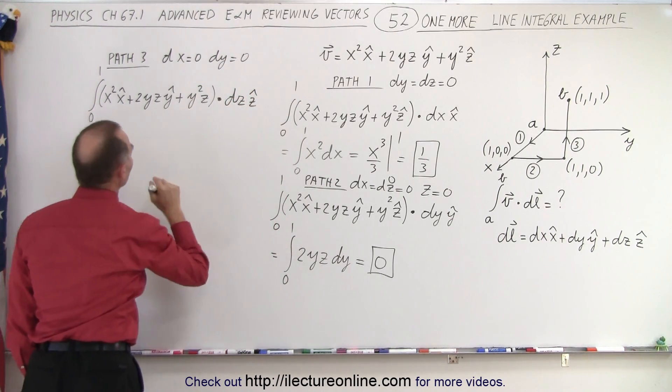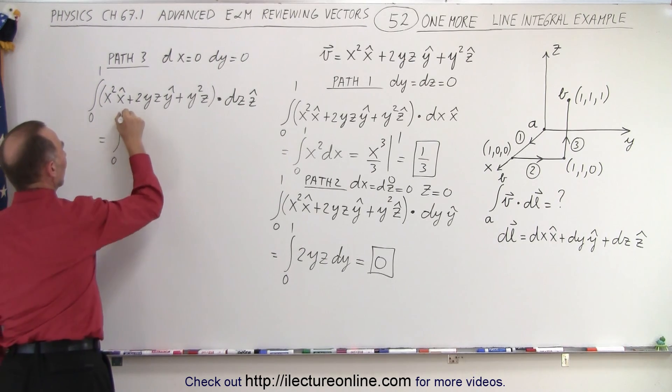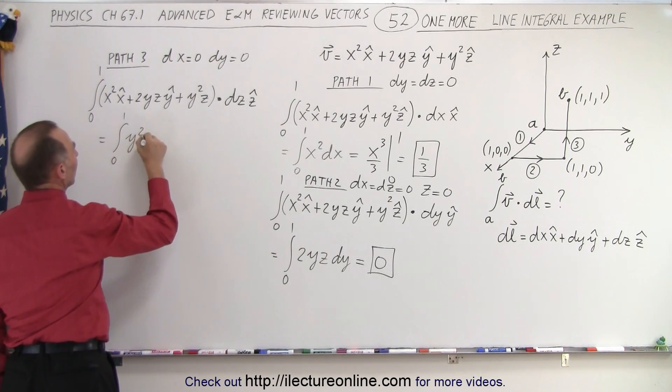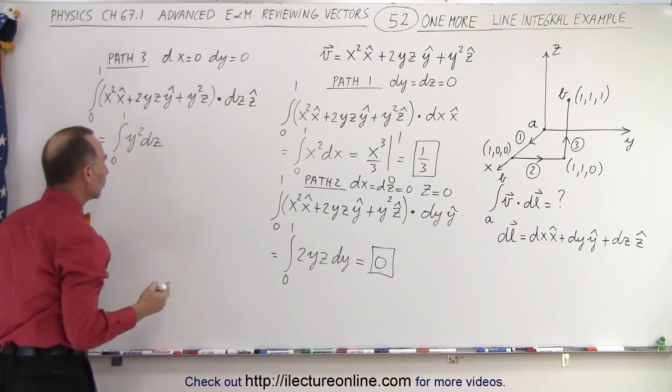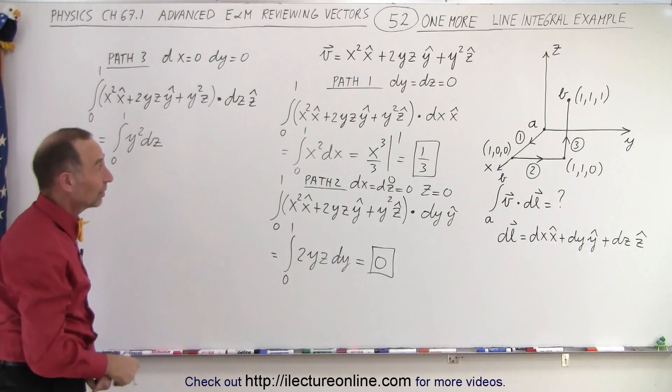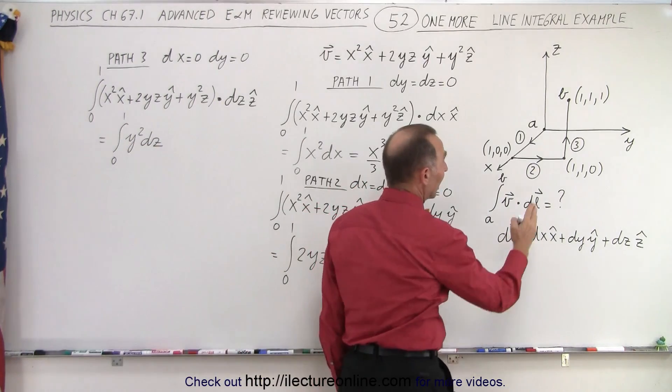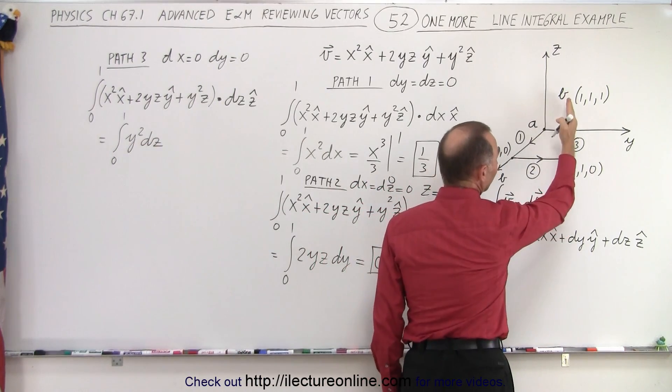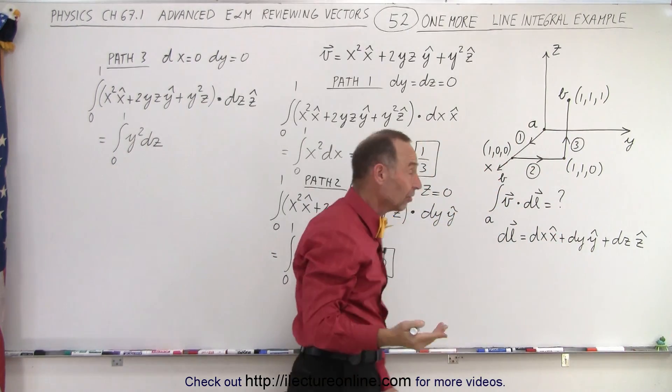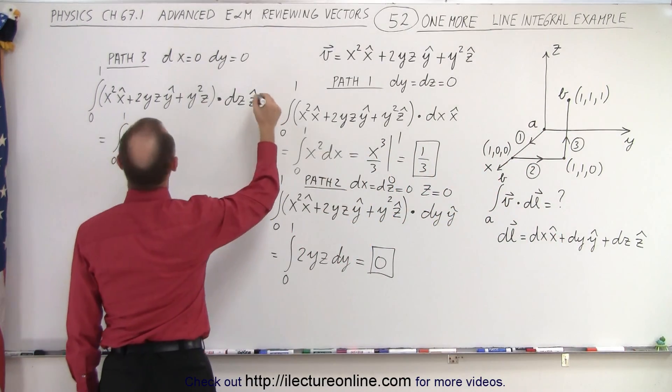So this is equal to the integral from 0 to 1 of y squared dz. Now of course we can't have an integral of y squared dz. Notice in this case y is equal to 1 along this path of travel and it remains 1 as a constant.